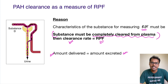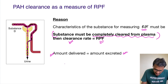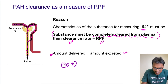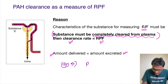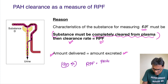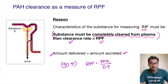So PAH clearance can give the values of renal plasma flow. However, the disadvantage of PAH is that only 90% is cleared from the plasma. A correction is therefore applied to calculate renal plasma flow: PAH clearance divided by 0.9. The correction factor 0.9 is used because only 90% is cleared from the plasma.